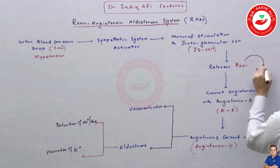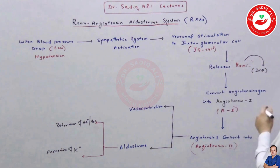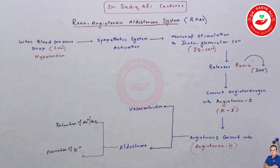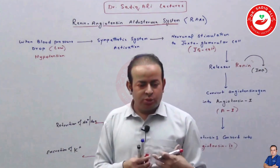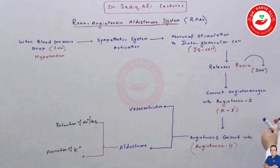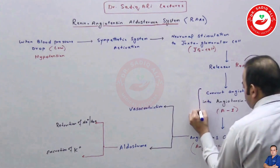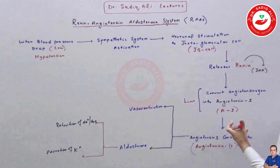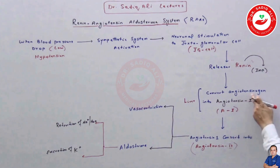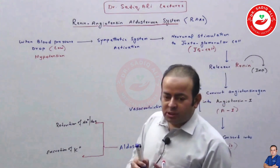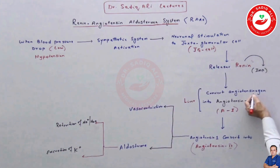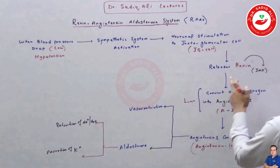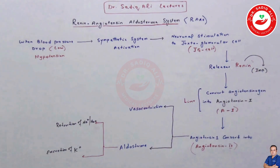For exam purposes, renin comes from the JG cells — specifically from the JG apparatus. This is very important to remember. After renin is released, it enters the bloodstream and travels to the liver. Within the liver, there is an inactive form of protein known as angiotensinogen. Renin converts angiotensinogen into angiotensin 1. So angiotensinogen is converted to angiotensin 1 within the liver, regulated by renin coming from the kidney.